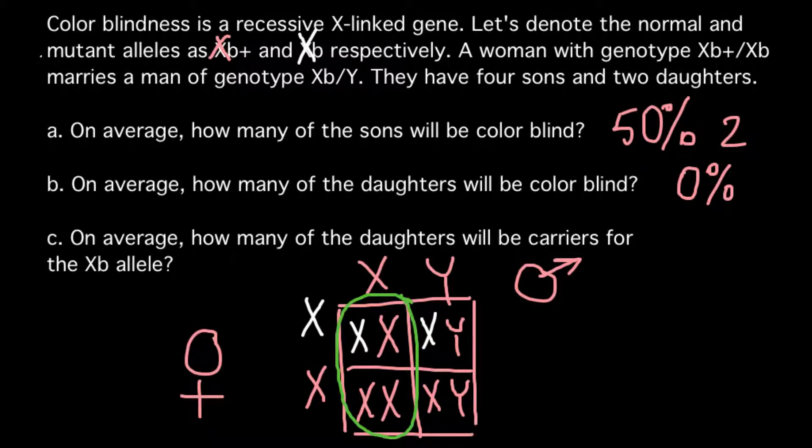And question C: On average how many of the daughters will be carriers for the XB allele? And as you see, 50% of the daughters would be carriers. So this is going to be our answer, 50% would be carriers.